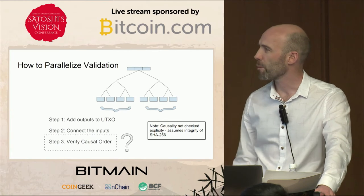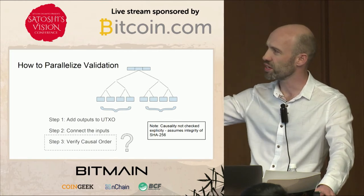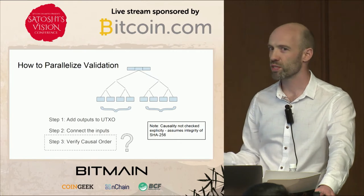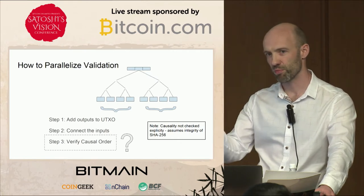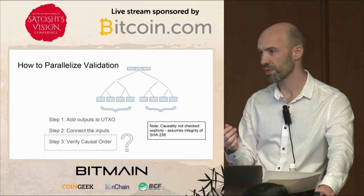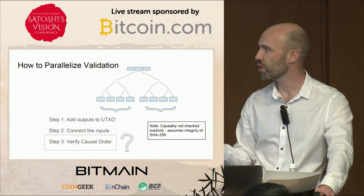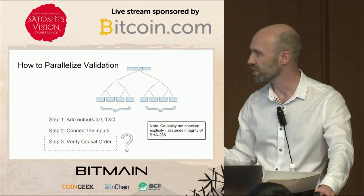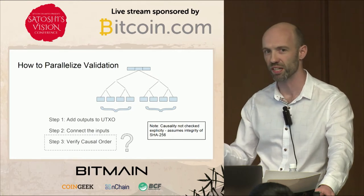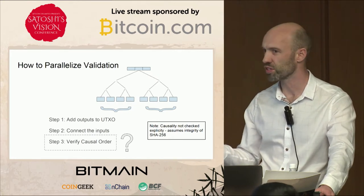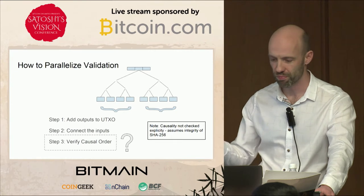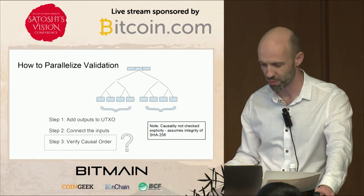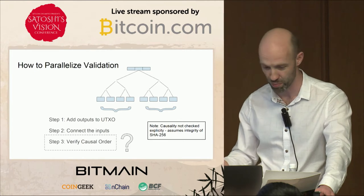One note: when you do it this way — adding outputs first and then checking inputs after — you're not explicitly checking that the inputs come from a previous transaction. But the only way that couldn't hold is if you break SHA-256. So you're basically adding an assumption, but I think we can assume SHA-256 is valid, or else we have bigger problems.